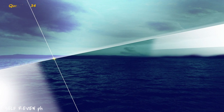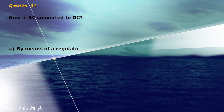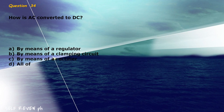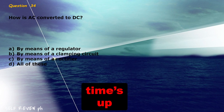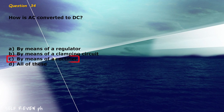Question 34: How is AC converted to DC? A) by means of a regulator, B) by means of a clamping circuit, C) by means of a rectifier, D) all of these. The correct answer is letter C, by means of a rectifier.